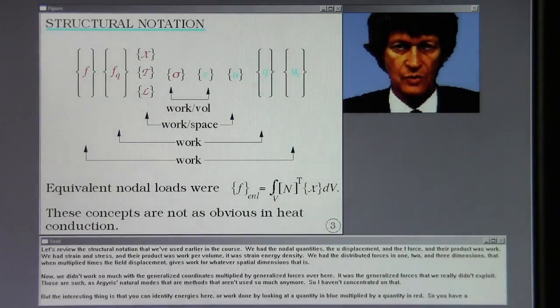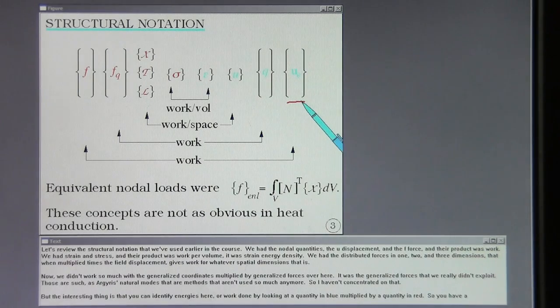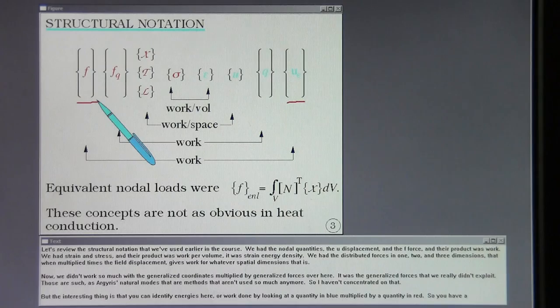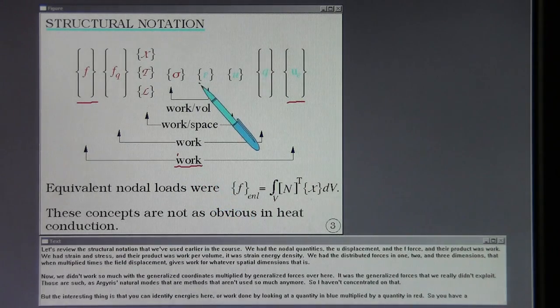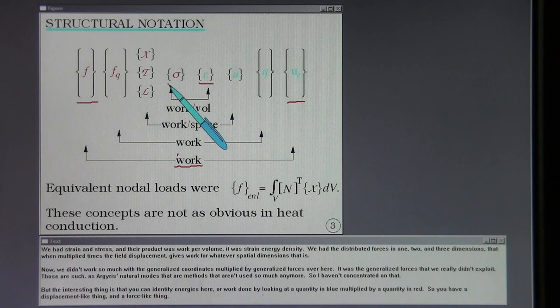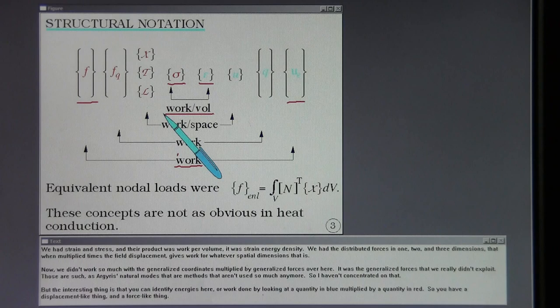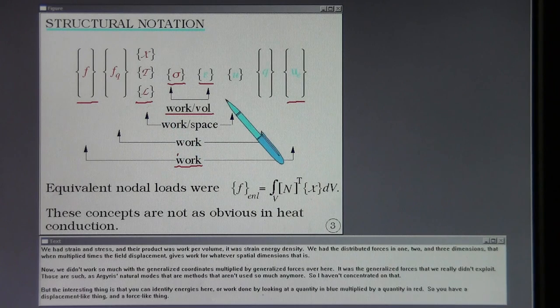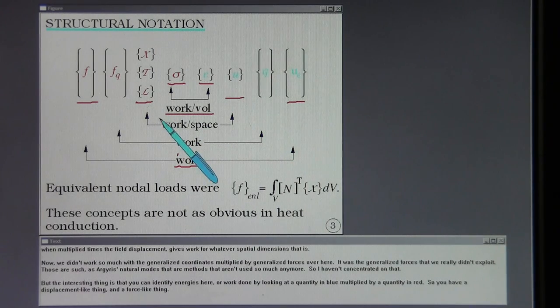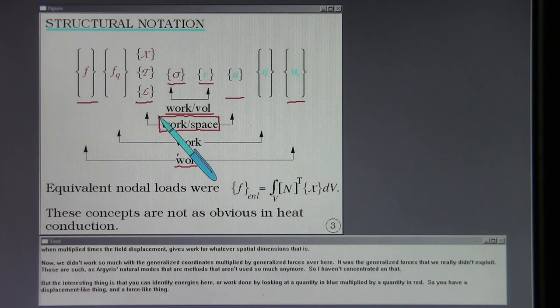Let's review the structural notation that we've used earlier in this course. We had the nodal quantities - the U displacement and the F force - and their product was work. We had strain and stress, and their product was work per volume, strain energy density. We had the distributed forces in one, two, and three dimensions that when multiplied times the field displacement gives work for whatever spatial dimensions that is.